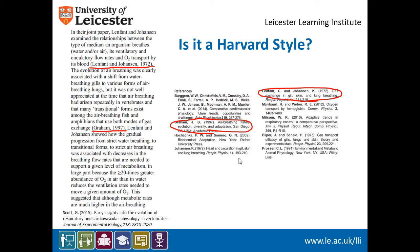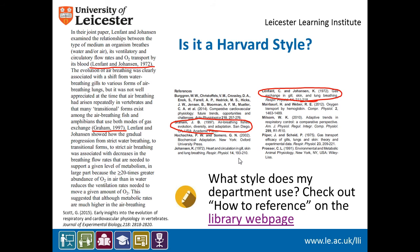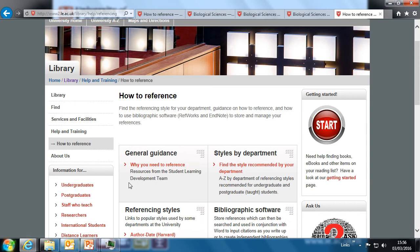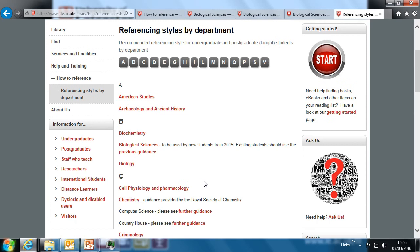Academics must follow the exact referencing format required by any journal they submit a paper to. You will also learn how to do this. Write down which words are in bold and which are in italics. You can find out the referencing style for your department on the library website under how to reference. Click on how to reference, find the style recommended by your department, and choose your department from the list.